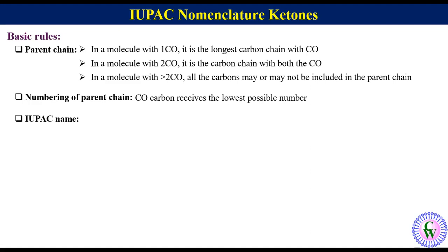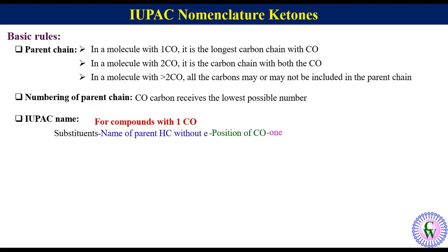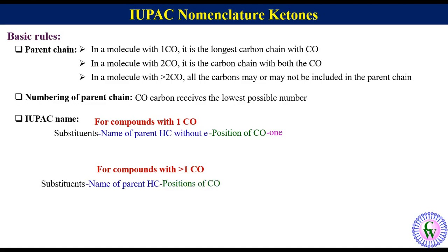The third point is regarding the structure of the IUPAC name. For compounds with one carbonyl group, it is: substituents, name of parent hydrocarbon without 'e', position of the keto group, then 'one'. For compounds with greater than one carbonyl group, it is: substituents, name of parent hydrocarbon, positions of carbonyl groups separated by comma, numerical prefixes like di, tri, tetra, penta, etc. to indicate the number of keto groups, then 'one'.